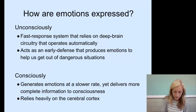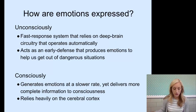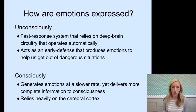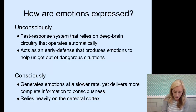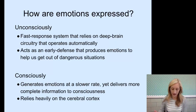Consciously, emotion is linked to explicit memories — make a note about explicit memories here. It's the conscious memories of facts or events that we try to actively remember. So it generates emotions at a slower rate but delivers more complete information to consciousness, and we're more aware and more able to talk about it. It relies heavily on the cerebral cortex, attaching emotional reactions to concepts and experiences that you find especially interesting, attractive, or even repulsive, and you can outwardly talk about that.